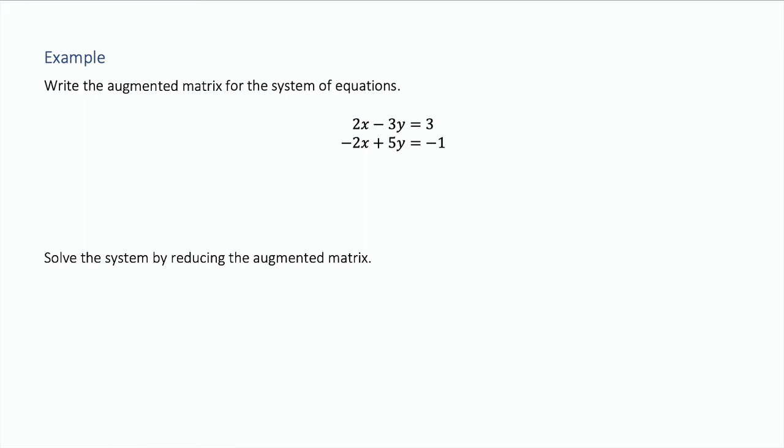Let's do a quick example. First, write the augmented matrix for this system of equations. In our matrix, we get a row for each equation and just list the coefficients. Drop the variables x and y. We get 2, negative 3, and 3. The second equation will be our second row: negative 2, 5, and negative 1. This is the augmented matrix.